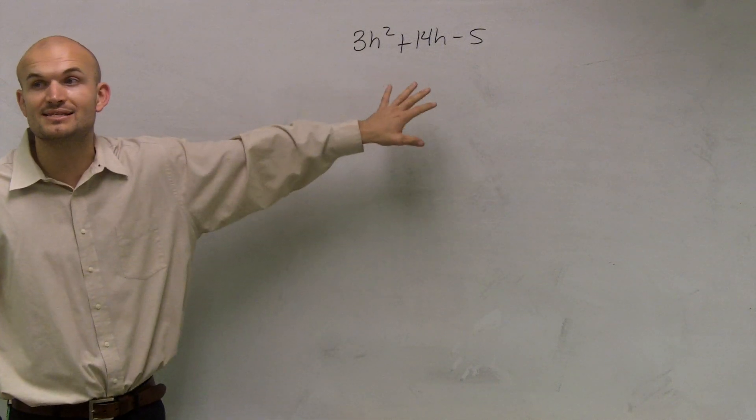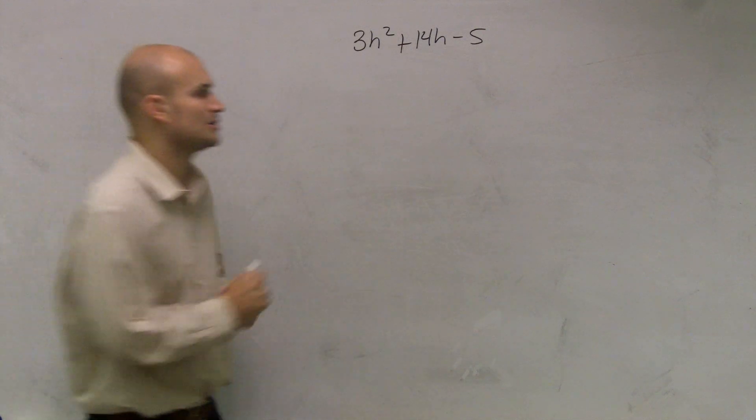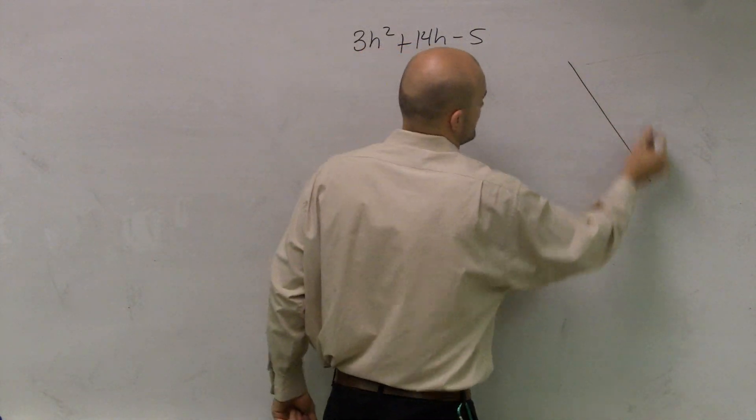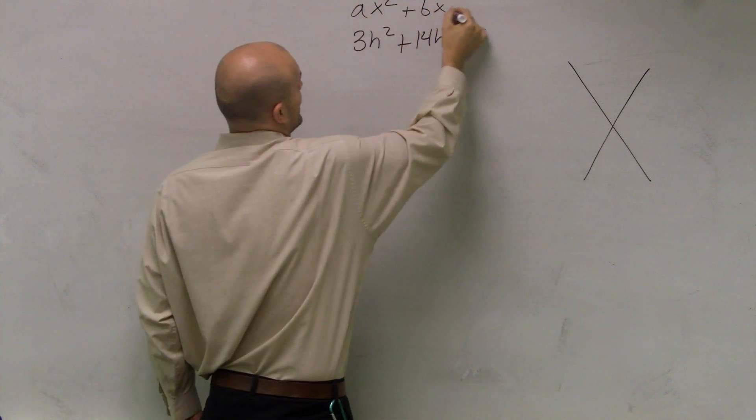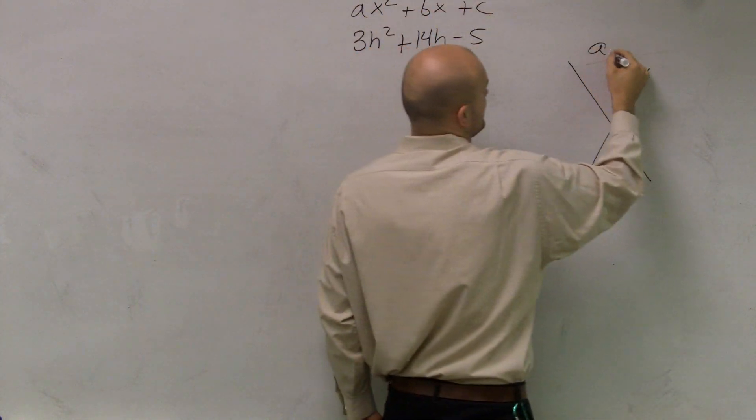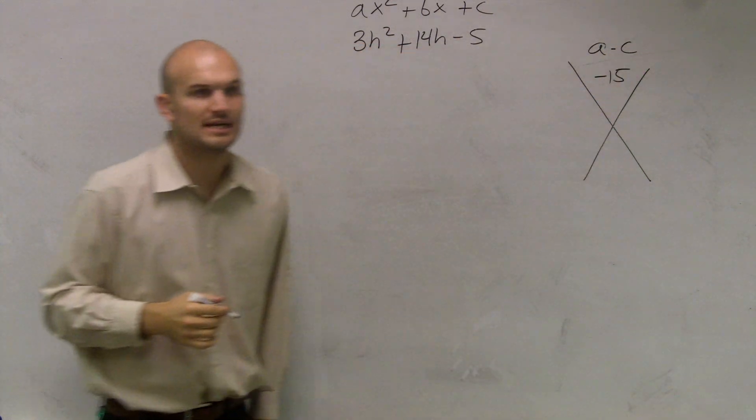We look at this and we say, no, there's nothing that these three terms have in common. So automatically, I'm going to go through my X, right? And remember, this is ax squared plus bx plus c. Up top, a times c, which is 3 times negative 5, which is a negative 15.